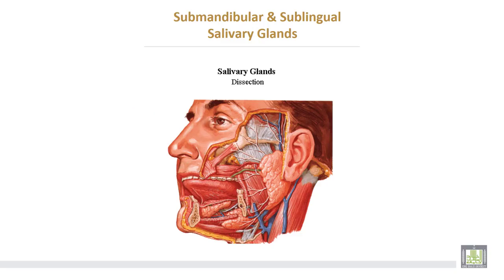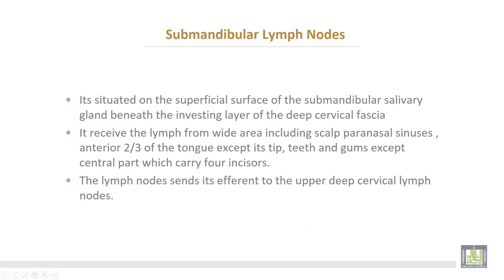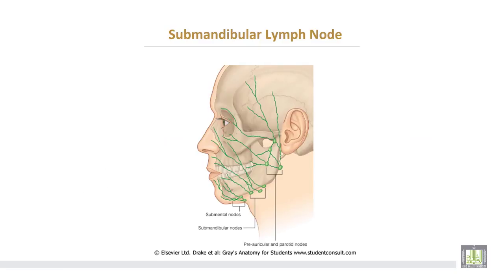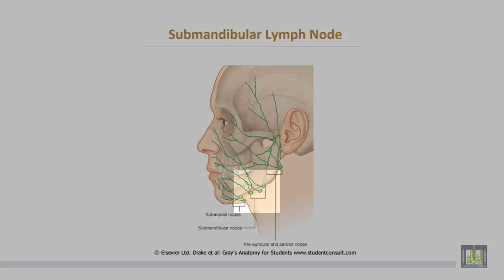This is the sub-mandibular salivary gland, this is the sub-lingual salivary gland, and this is the largest one — the parotid gland. The sub-mandibular lymph nodes are situated on the superficial surface of the sub-mandibular salivary gland, beneath the investing layer of the deep cervical fascia. They receive lymph from a wide area including the scalp, paranasal sinuses, the anterior two-thirds of the tongue except the tip, teeth and gums except the central part which bears the four incisors. The lymph nodes drain to the upper deep cervical lymph nodes.